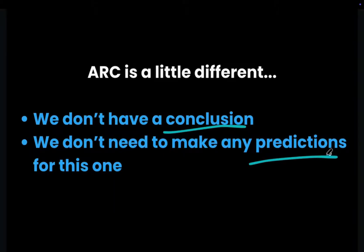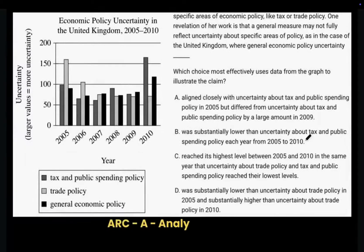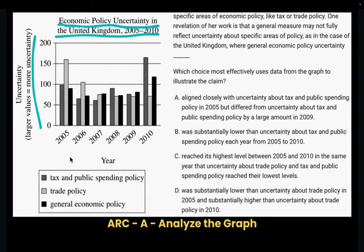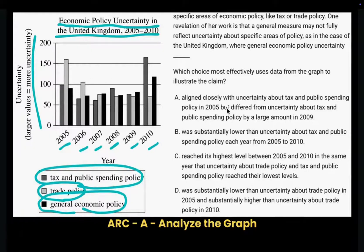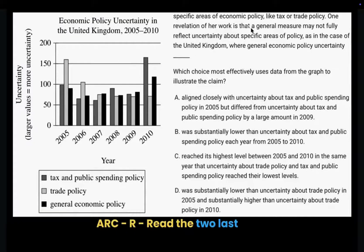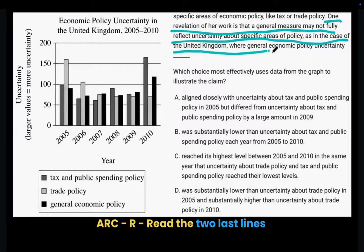Analyzing the graph first: it's about economic policy uncertainty in the United Kingdom from 2005 to 2010. It shows the amount of uncertainty on the left and the year on the bottom. The white color represents trade policy, the gray represents tax and public spending policy, and the black represents general economic policy. Now moving to R in ARC — read around the last two lines. Reading: 'a general measure may not fully reflect uncertainty about specific areas of policy, as in the case of the United Kingdom, where general economic policy uncertainty — blank.'